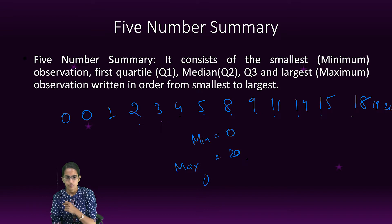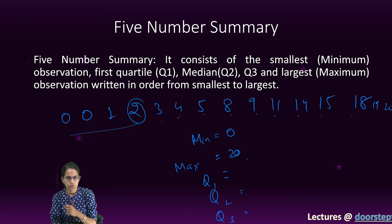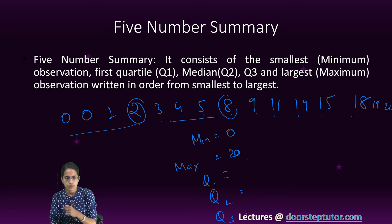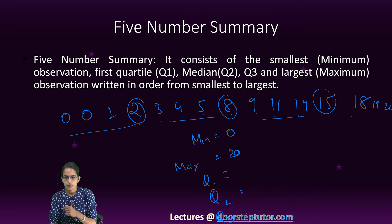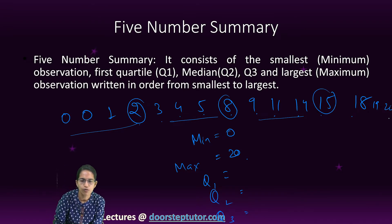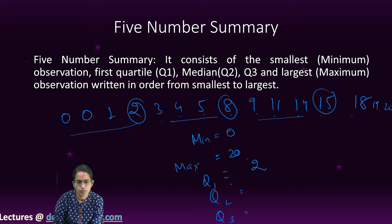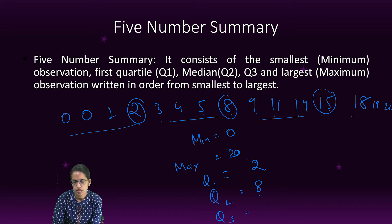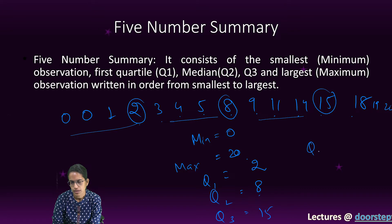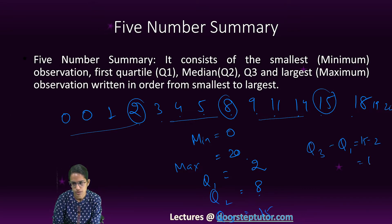Now there are 15 numbers, so we would calculate Q1, Q2, Q3. Quartile 1, the fourth value which is 2. Q2 is the eighth value which is 8. Q3 is the twelfth value which is 15. Then I find out the interquartile range which is Q3 minus Q1 which is 15 minus 2 which is 13.